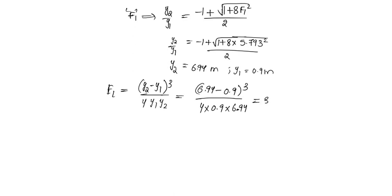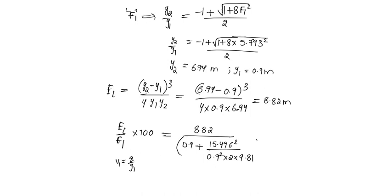Energy loss to the initial energy specific energy in percentage will be 8.82 by e1. e1 will be y1 that is 0.9 plus v1 square, that is 15.496 square. v1 can be written as q by y1, so q square by y1 square is 0.9 square into 2g, 2 into g is 9.81, times 100 in percentage will be 55.092 percent.